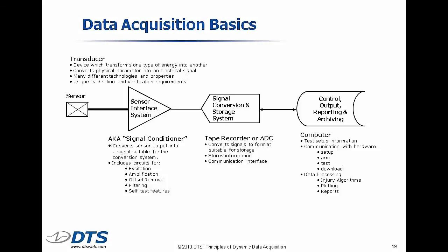Data acquisition systems can be broken down into four very simple blocks. Number one, we have a sensor, which can also be called a transducer. The sensor is merely a device that transforms one kind of energy into another. It's equivalent to the microphone I'm speaking into — it picks up pressure waves when I speak, converts those into a small signal, goes off to an amplifier, and then into another transducer, a speaker, to convert that back to more powerful pressure waves. So a transducer takes a physical parameter and converts it into a small signal. That's all it does.